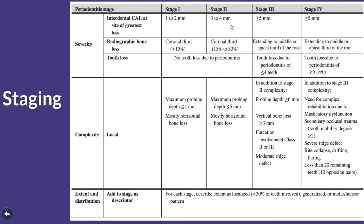In Stage 2, attachment loss is 3–4 mm, with 15–33% bone loss in the coronal third, and again no tooth loss. In Stage 3, the attachment loss should be more than 5 mm. This is a difficult but most accurate method of scoring the severity of the disease.